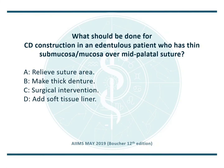This was asked in AIIMS May 2019: What should be done for complete denture construction in an edentulous patient who has a thin mucosa over the mid-palatal suture? The options are: A. Relieve the suture area, B. Make thick dentures, C. Surgical intervention, or D. Add soft tissue liners. The correct answer is A — relieve the suture area.